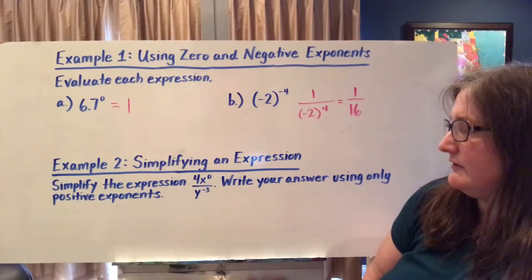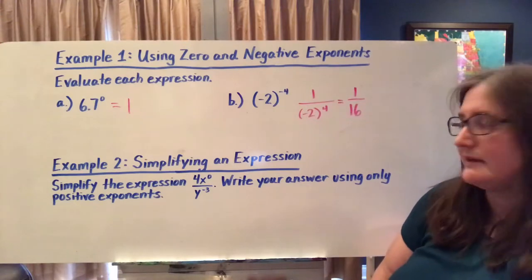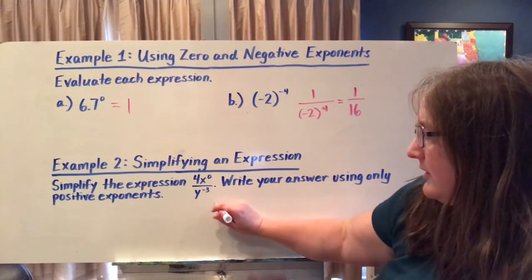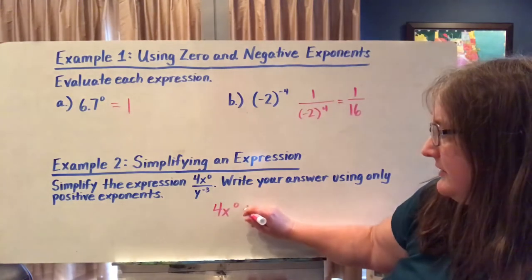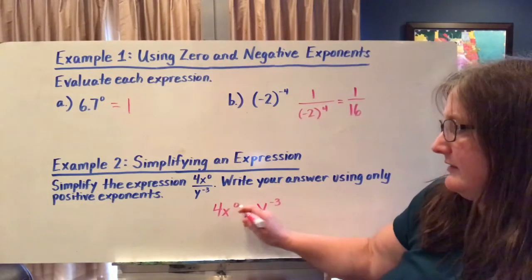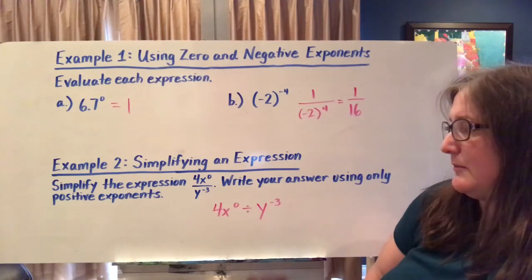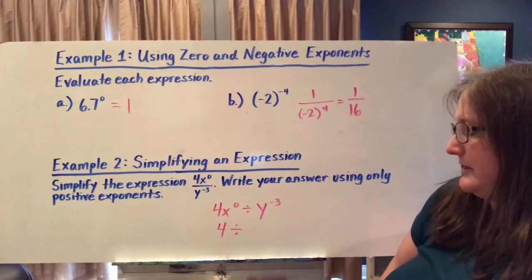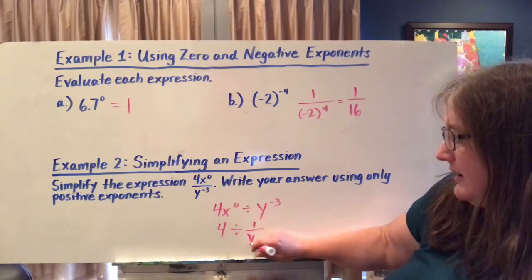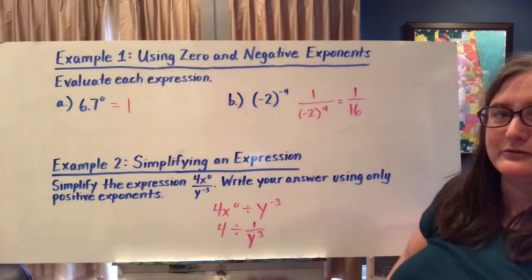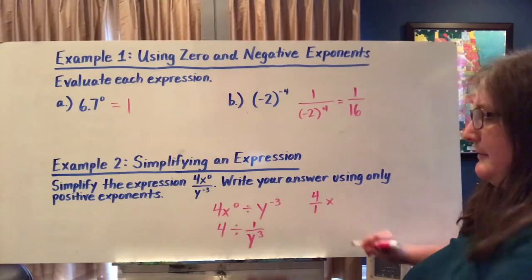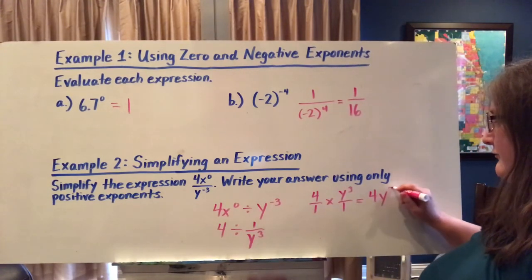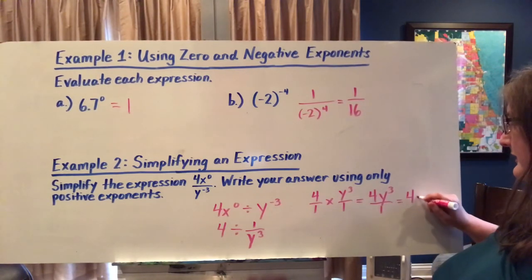In this case, I have four times x to the zero power divided by y to the negative third power, and they're asking us to write our answer using only positive exponents. So I've got four times x to the zero power divided by y to the negative third power. Well, x to the zero power — if x is a non-zero base — is going to be one. And four times one is four. Y to the negative third is the reciprocal of y to the third, so one over y cubed. Now dividing fractions, I multiply by the reciprocal of the second one — y cubed over one. So on the top I have four times y to the third, and on the bottom one times one, which is one. This simplifies to four times y to the third power.